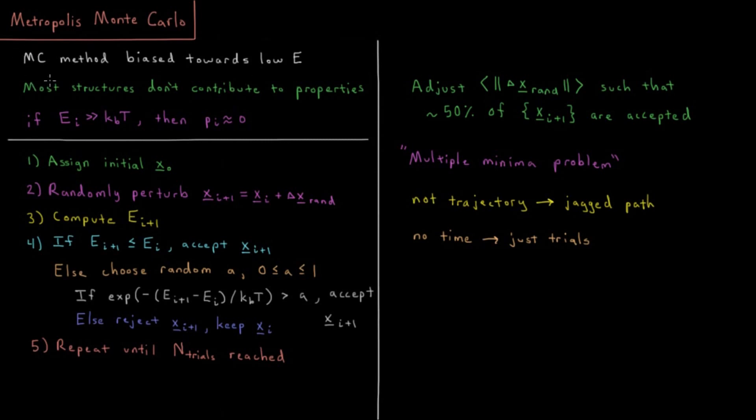What we wanted is a Monte Carlo method which is biased towards low energy structures, and that method is called Metropolis Monte Carlo. Since most structures don't contribute to the properties, whenever your energy is much greater than KT your probability is going to zero. We have this modified Monte Carlo algorithm which we will use to simulate our systems.